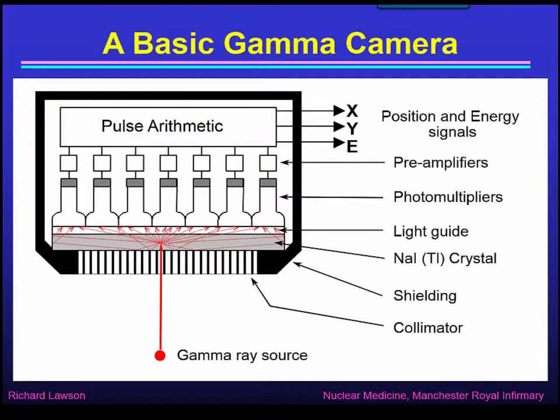Each gamma-ray interacts to give a flash of several thousand visible light photons, which are reflected and channeled out through the light guide to reach the photomultipliers. The signal from each photomultiplier is amplified and passed to the pulse arithmetic circuit, which calculates the energy of the gamma-ray from the total amount of light received, and also x and y coordinates representing the position in the crystal where the gamma-ray interacted.